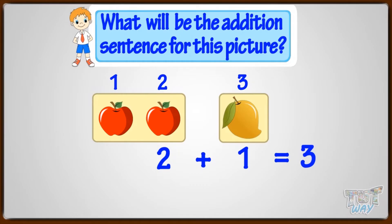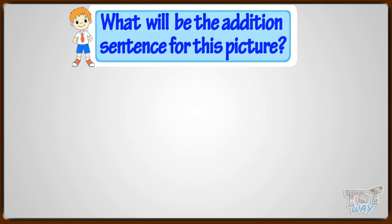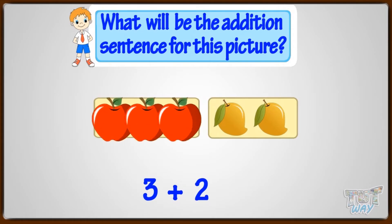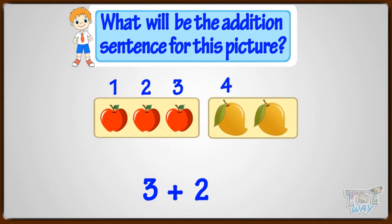Now, let's take another example. What will be the addition sentence for this picture? There are 3 apples and 2 mangoes. So, write 3 plus 2. Now, count the total number of fruits. You know apples are 3. So, count from 4, the mangoes. 4, 5. So, the total fruits are 5. Write 3 plus 2 equals 5. And this is our addition sentence for the picture.